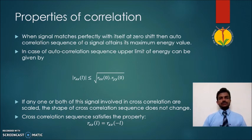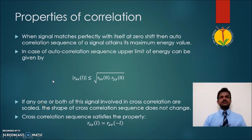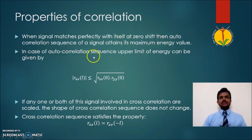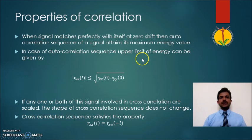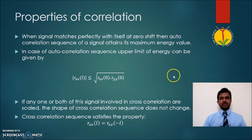Let us now see different properties of correlation. When a signal matches perfectly with itself at zero shift, the autocorrelation sequence attains its maximum energy value. In the case of the autocorrelation sequence, the upper limit of energy can be given by the corresponding formula. That is about the autocorrelation.